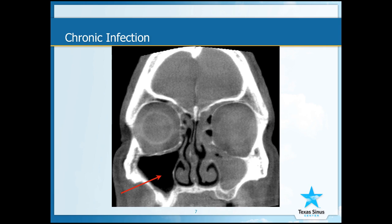In this CT scan, you can see the red arrow on the patient's right represents a clear black sinus with only a little bit of gray thickening in the bottom, whereas this arrow shows a significantly blocked and infected sinus. An infection this bad can cause chronic headaches.